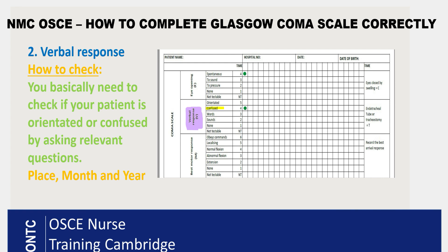You can't just mark them confused because they look a bit confused — that would be wrong, and that's why nurses are failing. You need to ask specific questions: you can ask where they are, what month it is, and what year it is. If they answer even one question wrong out of the three, you mark them as confused, because someone who is not confused should definitely know where they are, what month it is, and what year it is. If they answer anything wrong, mark them confused — you can mark that as a dot on the chart.